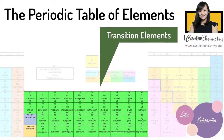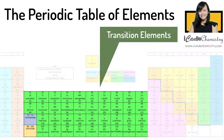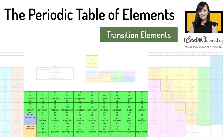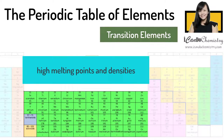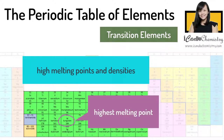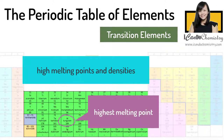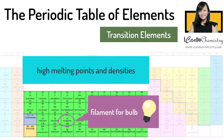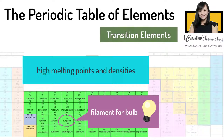The transition elements are the block of metals between group 2 and group 3 of the periodic table. Transition elements have high melting points and densities. Tungsten is a transition element and it has the highest melting point of all transition metals — about 3,400 degrees Celsius. Tungsten is a great choice to be used as filaments for bulbs as it does not melt even when it is hot.